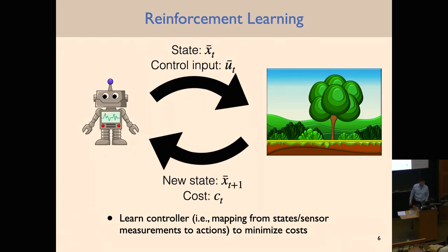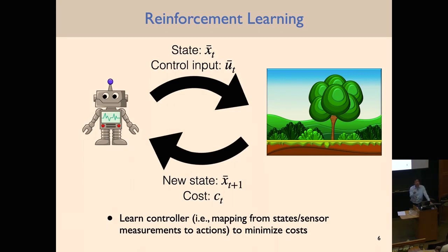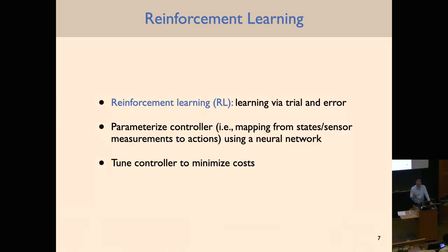In reinforcement learning, we have some robot — called the agent in the RL literature — interacting with some environment. Using notation from our feedback control lectures: XT (or ST) is the state, UT (or AT) is the control input. At any given time there is some state for the robot and the environment, the robot takes a control input, there's a new state, and the environment gives the robot some cost or reward. The goal is to learn some controller — a mapping from states or sensor observations to actions — that minimizes the cost from the environment.